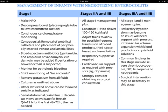For Stage 3a and 3b, in addition to all previous measures, refractory hypotension may become an issue requiring vasopressor support. Intravascular volume expansion with blood products and crystalloid solutions is needed. Common findings at this stage include severe thrombocytopenia, DIC, leukopenia, or neutropenia. Surgical intervention may be necessary.